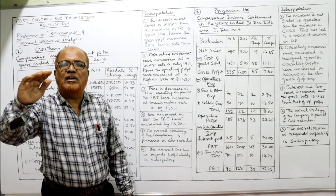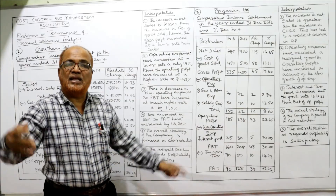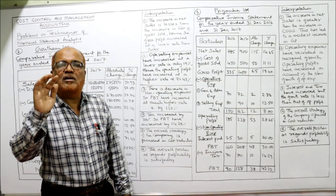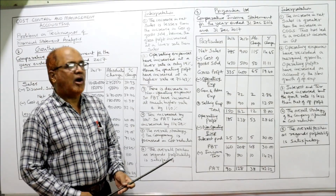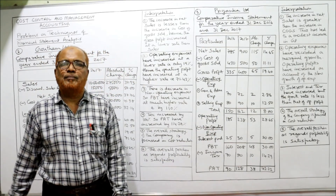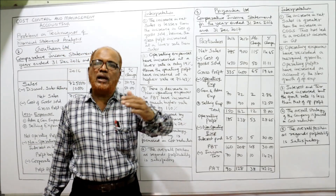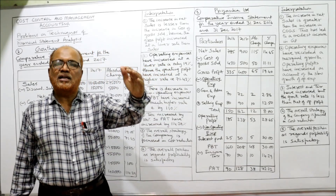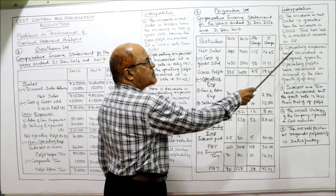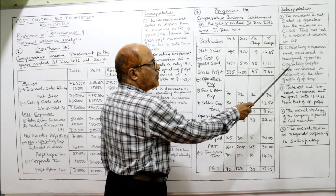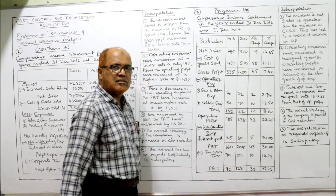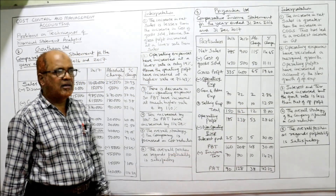Second interpretation: operating profit increased by 28.65%, while gross profit increased by 19.4%. Operating profit increased at a higher rate than gross profit because operating expenses increased at a lower rate — only 8%. Operating expenses have recorded a marginal growth, so operating profit increased on account of the slow growth of operating expenses.